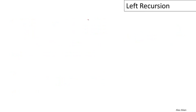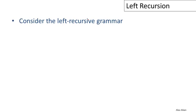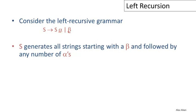This seems like a major problem with recursive descent parsing, and it is a problem — but as we'll see, it's really not so major. Let's consider a left recursive grammar of a slightly more general form. Here we have two productions for S: S goes to S followed by alpha, or it goes to something that doesn't mention S, which we'll call beta.